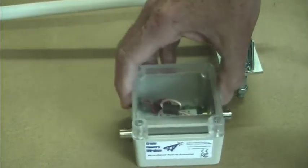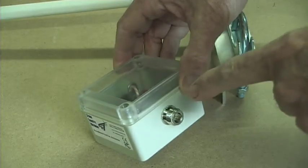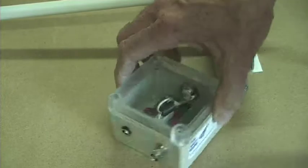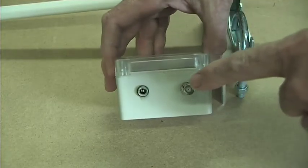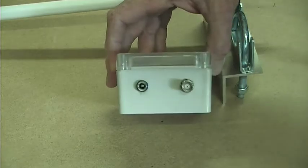The base unit has an N-type female connector for the input and a BNC female connector on the output. A DC power connector is used to feed 12V to the base unit.